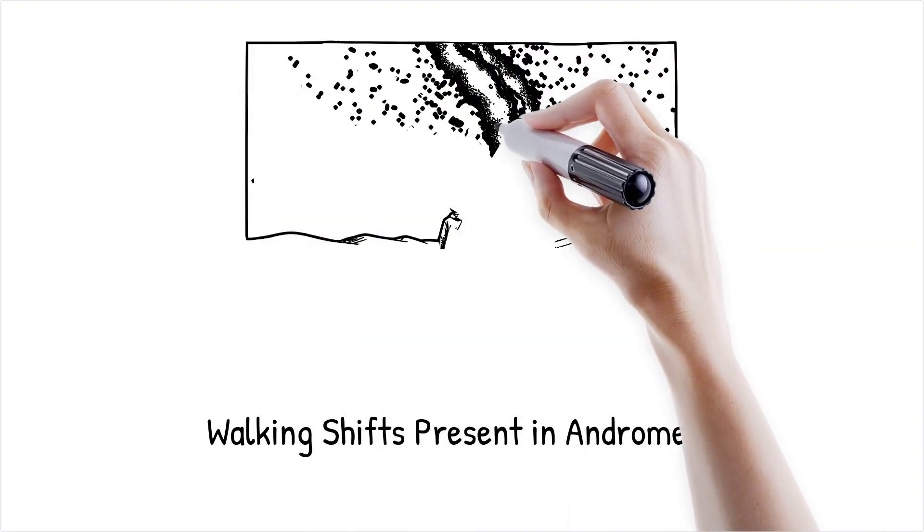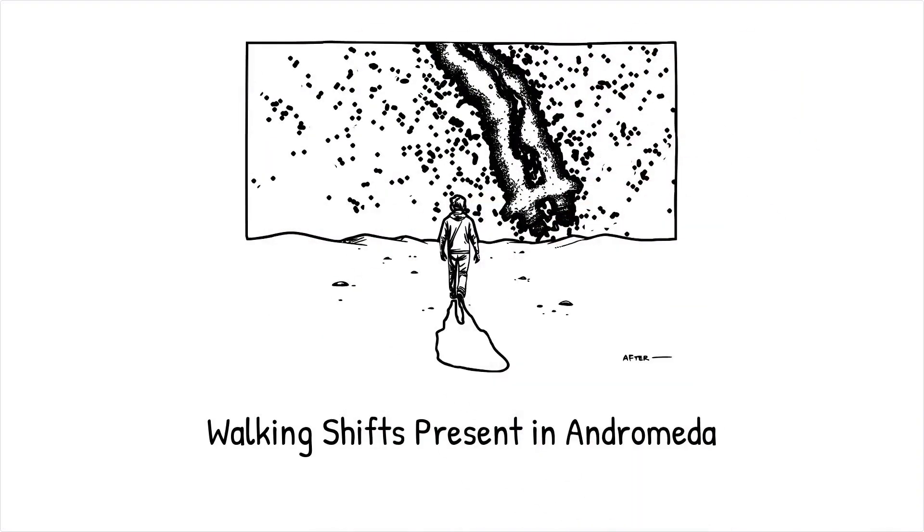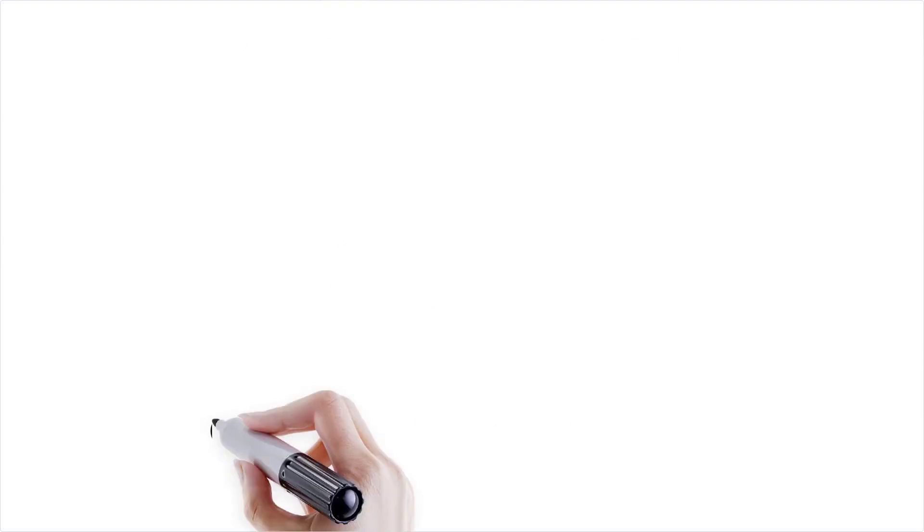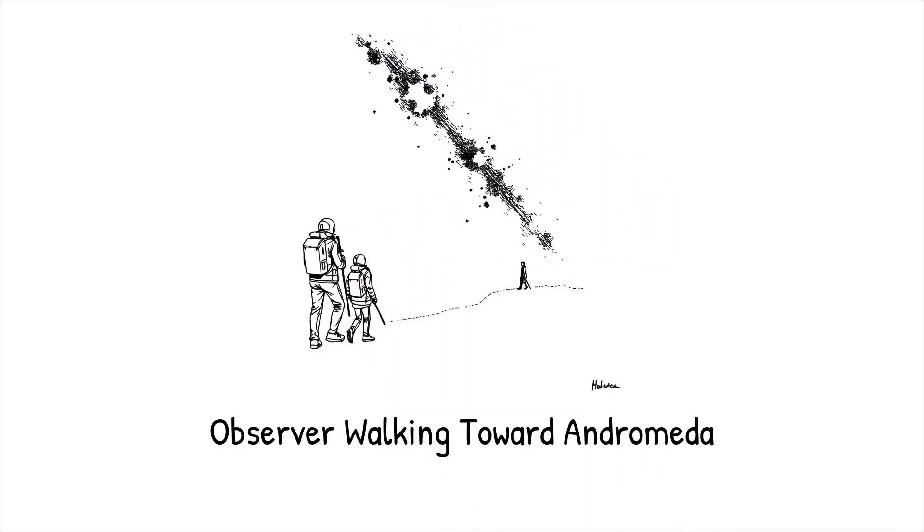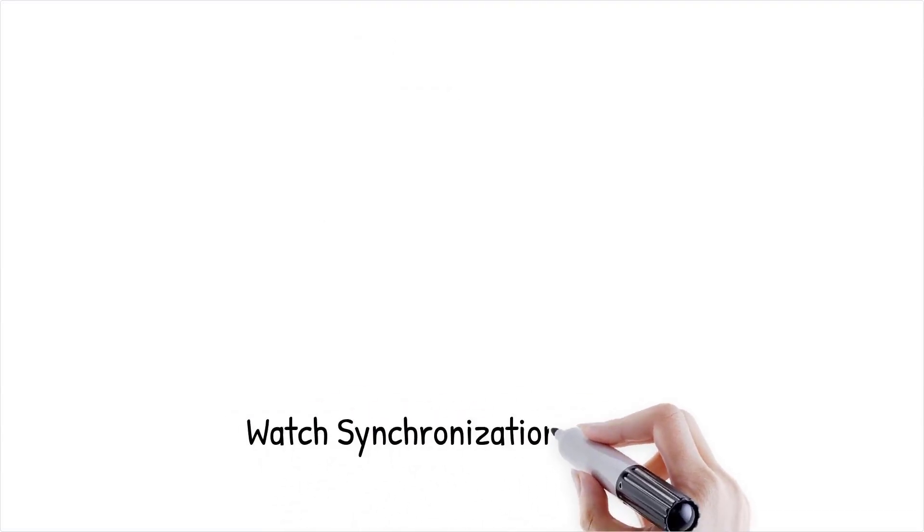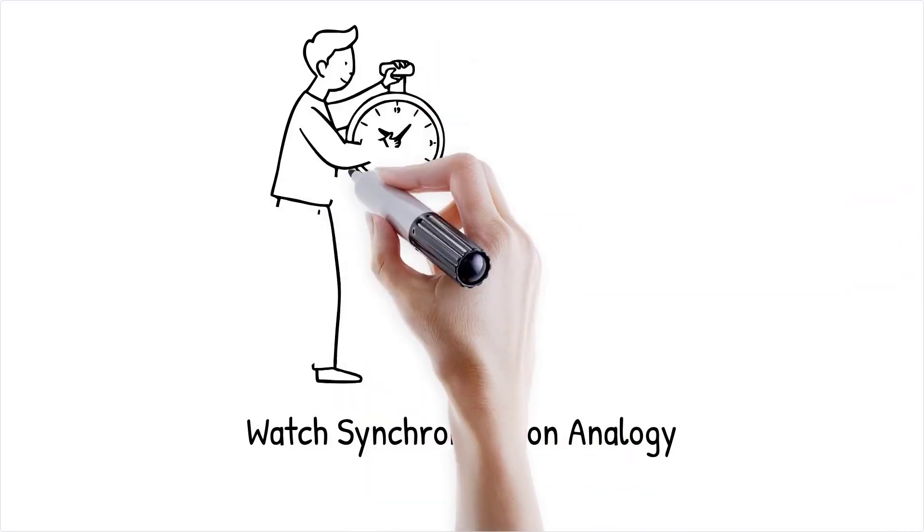For example, if one observer walks toward Andromeda while another stands still, their slight motion means they will consider Andromeda's timeline to be shifted by thousands of years, even though the difference on Earth is undetectable. This is like two people setting their watches to the same time but pressing start at slightly different moments. Over long distances, even a tiny discrepancy results in significant differences.